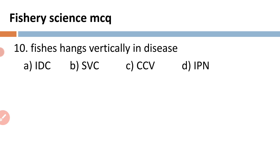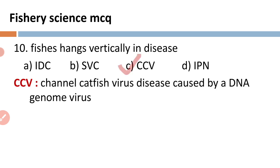The tenth question for today's video: fishes hang vertically in which disease? A) IDCV, B) BSV, C) CCV, and D) IPNV. There is a particular disease called CCV, which stands for channel catfish virus disease. In this particular disease, the fish hangs or swims vertically in the water. This CCV disease is caused by a DNA genome virus.